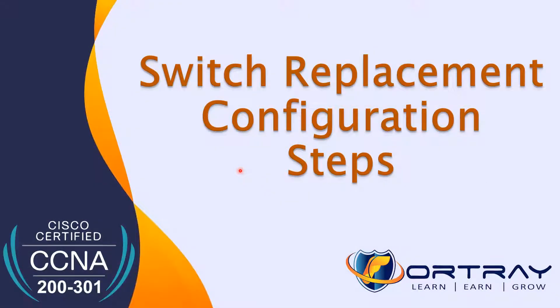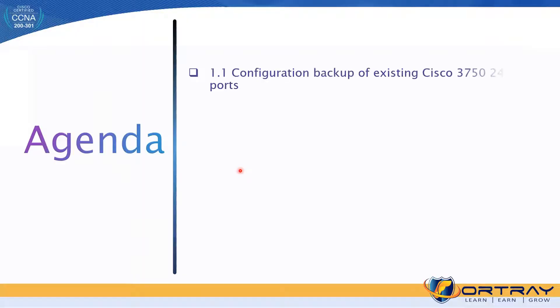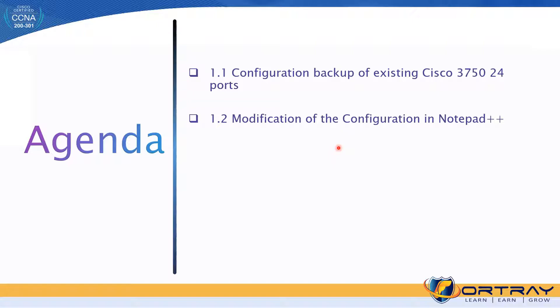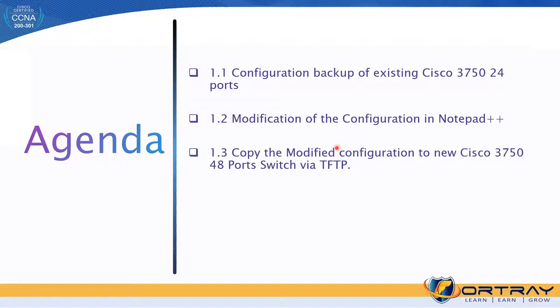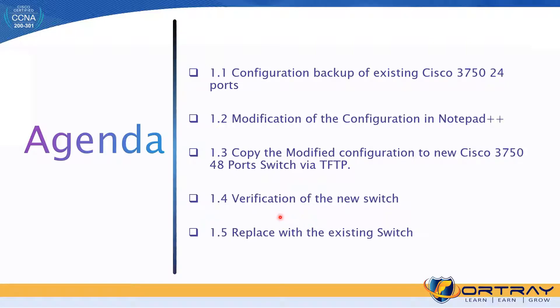We are going to replace our fast ethernet with gigabit ethernet in the LAN environment with 24 to 48 ports. We are taking the configuration backup from the existing switch — a 3750 with 24 ports fast ethernet. We need Notepad++ to modify the configuration, then download that configuration file from TFTP to the new switch with 48 ports, and verify the new switch configuration.